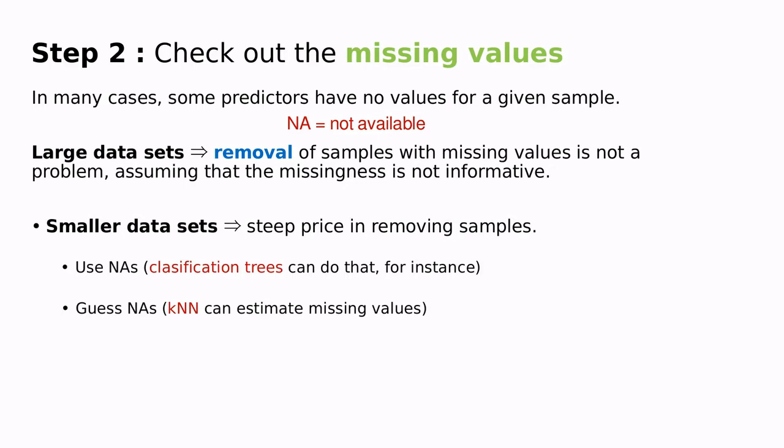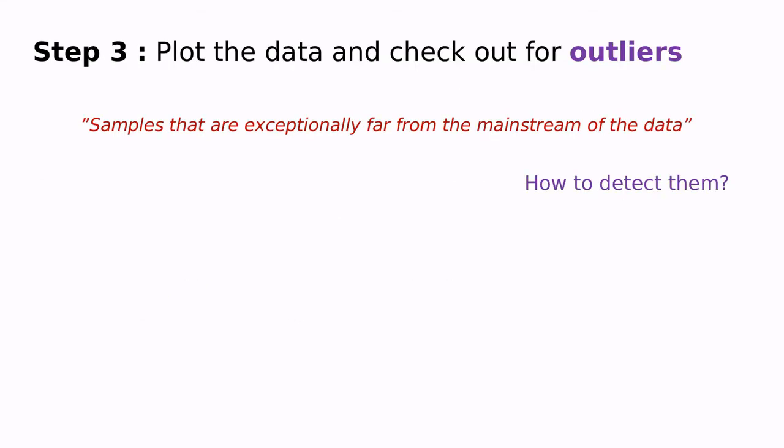In some other cases, the dataset is small. So dropping the data is not a choice because we have to pay a steep price in removing the samples. The simplest solution is use an algorithm that can handle NAs. For instance, classification trees can do that. And the other thing we can do is try to guess the NAs. For instance, some algorithms like KNN can estimate the missing values.